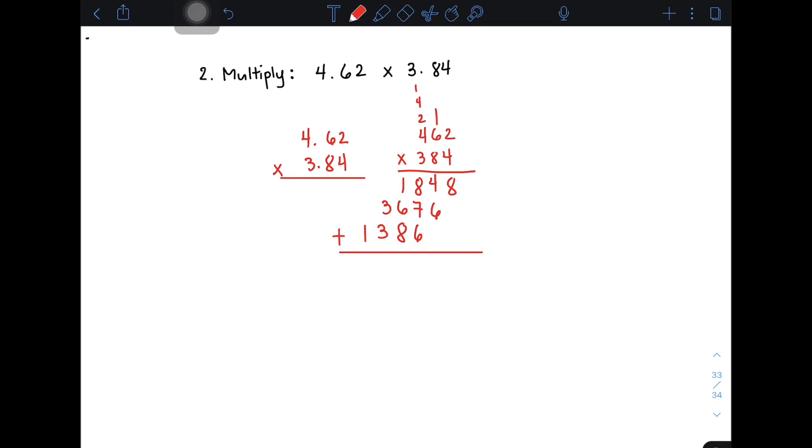Add the numbers. Bring down 8. 4 plus 6 is 10, so 0 carry 1. 1 plus 8 is 9, plus 7 is 16, plus 6 is 22, so 2 carry 2. 2 plus 1 is 3, plus 6 is 9, plus 8 is 17, so 7 carry 1. 1 plus 3 is 4, plus 3 is 7. Bring down 1.